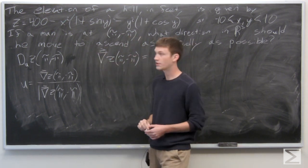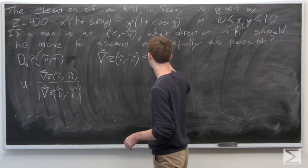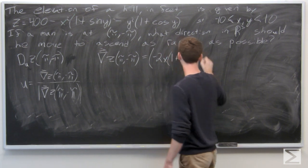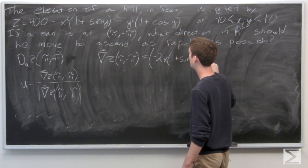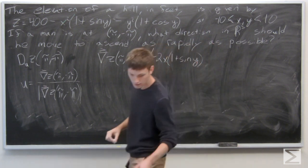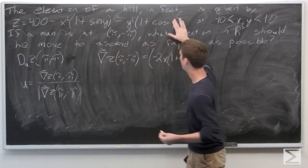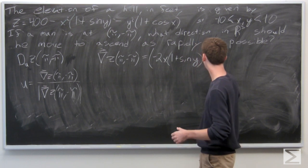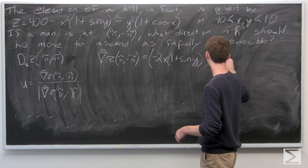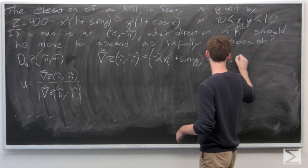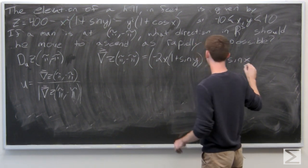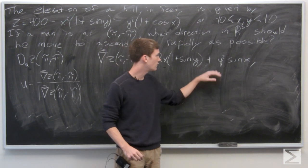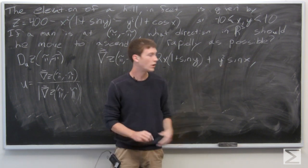The partial derivative of z with respect to x — quick correction: this should be cosine of x, not y, so the last term becomes minus y squared sine x. We get negative 2x times the quantity 1 plus sine of y, plus y squared times sine of x.